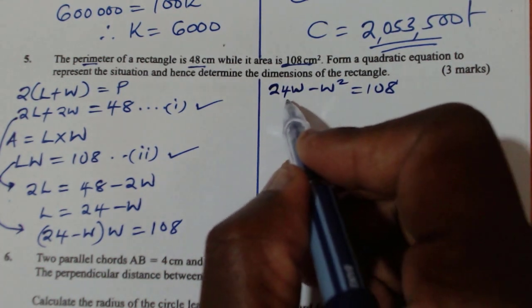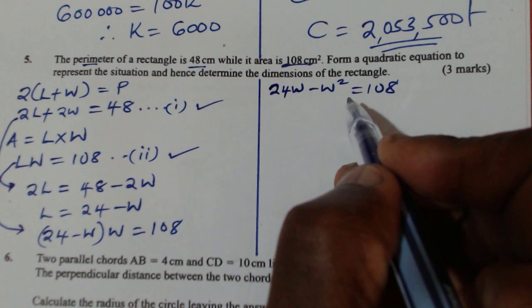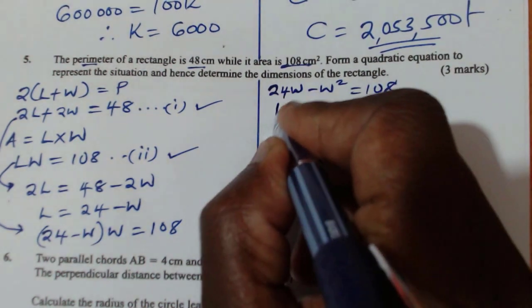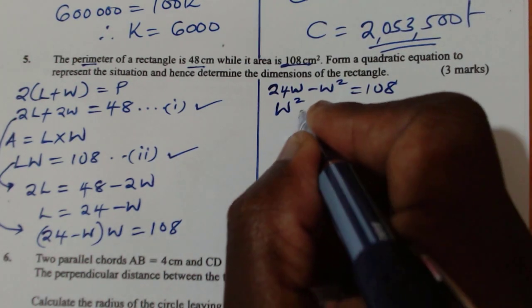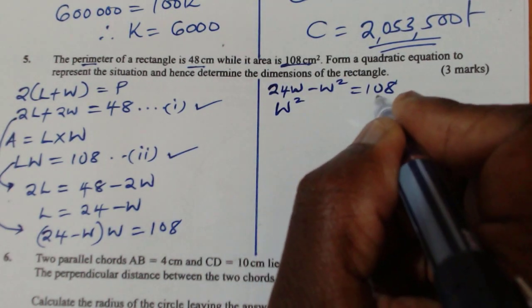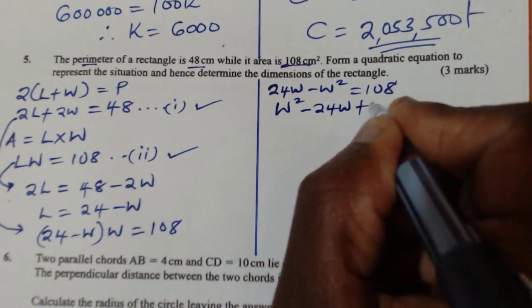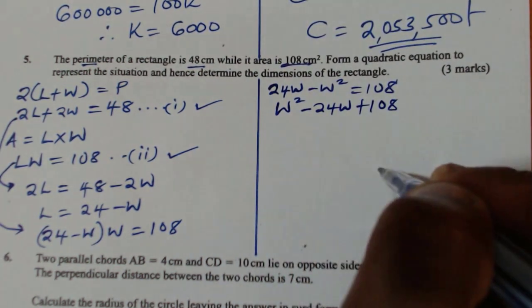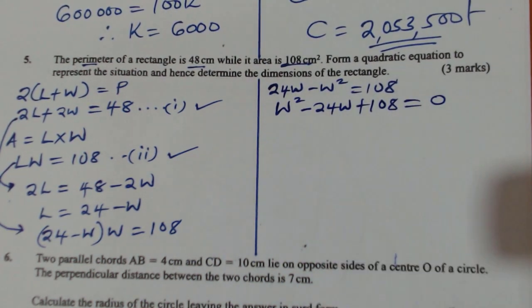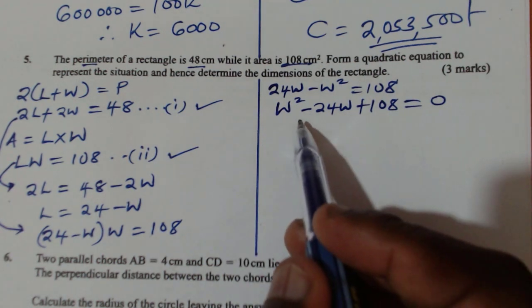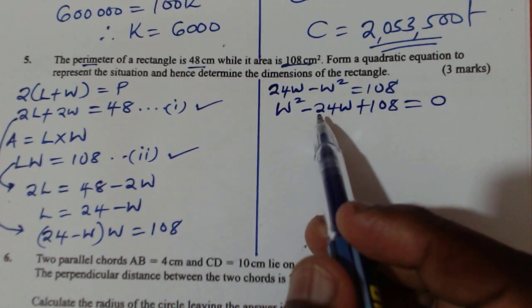This one is a quadratic equation. If you organize it, you will get W squared minus 24W plus 108 equals 0. So when you organize it, you'll form a quadratic equation. Solve this quadratic equation and get two values of W.